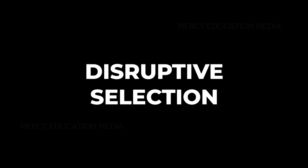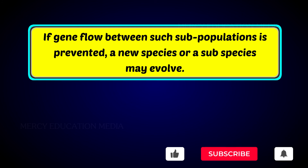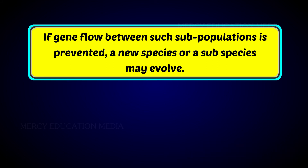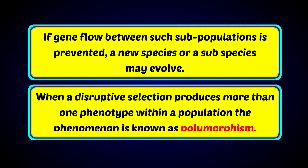Disruptive selection: if gene flow between such subpopulations is prevented, a new species or a subspecies may evolve. When a disruptive selection produces more than one phenotype within a population, the phenomenon is known as polymorphism.